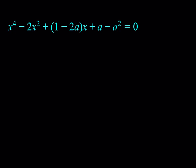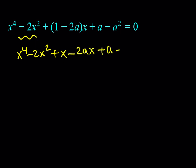I'm going to show you two methods to solve this problem. Let's get started with the first method. My first method involves a very interesting approach. First of all, I'd like to expand this as much as I can. So I have x to the fourth minus 2x squared plus x minus 2ax plus a minus a squared, equal to zero.